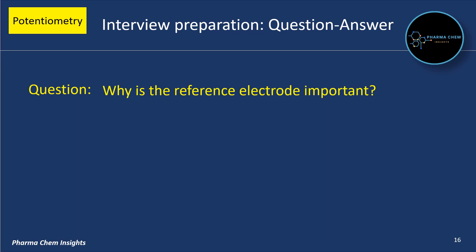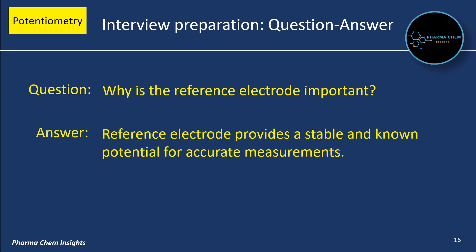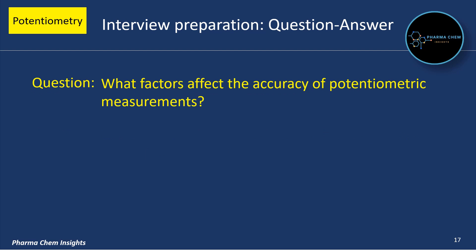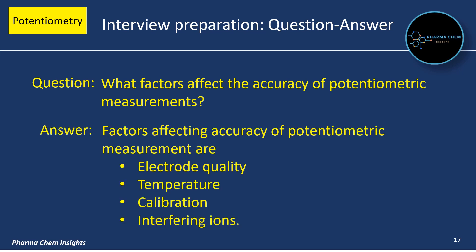Why is the reference electrode important? It is important because it provides a stable and known potential for accurate measurements. What factors affect the accuracy of potentiometric measurements? The factors are electrode quality, temperature, calibration, and interfering ions.